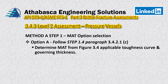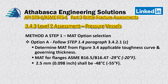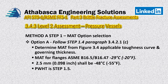We're going to determine the MAT from figure 3.4, based upon the applicable toughness curve and the governing thickness. The MATs for flanges are set to minus 29°C. If there are very thin materials, we get a credit to minus 48°C — a reminder that these are basic rules found in section eight, division one and division two. We're also going to take advantage of the post-weld heat treatment credit in step 1.5, where we get a reduction in the MAT.